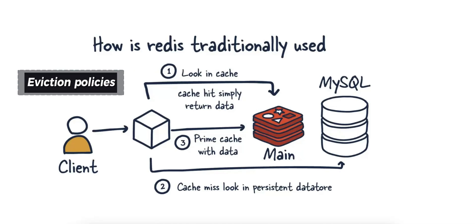There's also eviction policies. Redis can automatically evict keys when it reaches its memory limit, based on policies like LRU, or least recently used, and LFU, or least frequently used.